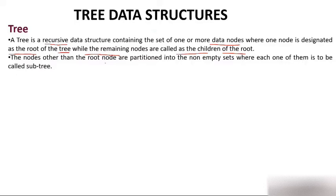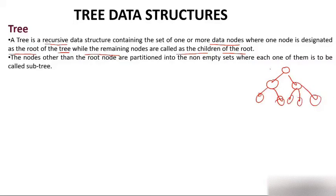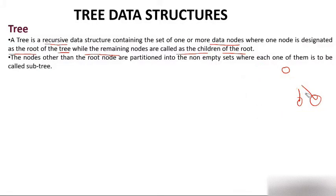The nodes other than the root node are partitioned into non-empty sets, where each one of them is called a sub-tree. After the root node there is a partition — this partition is called the left sub-tree, and this partition is called the right sub-tree.